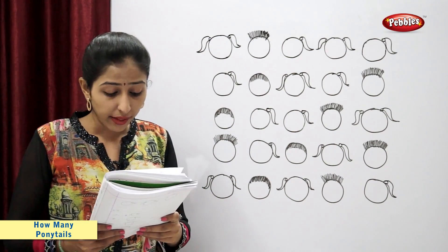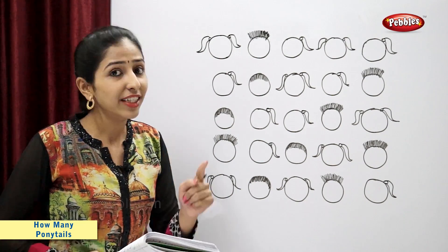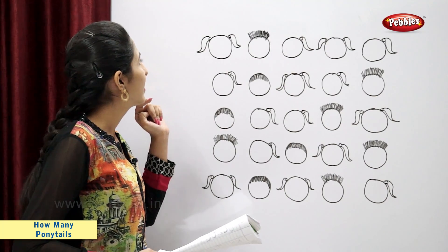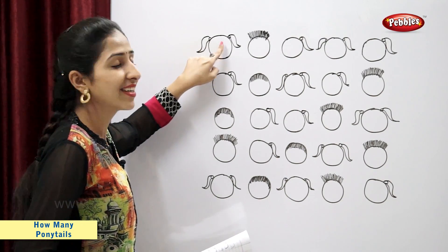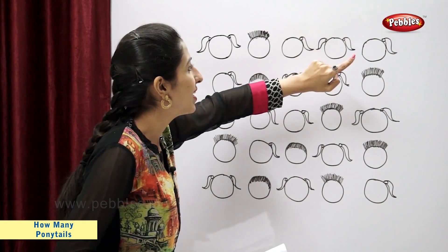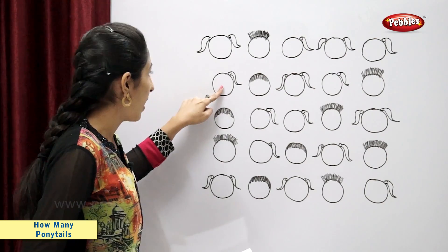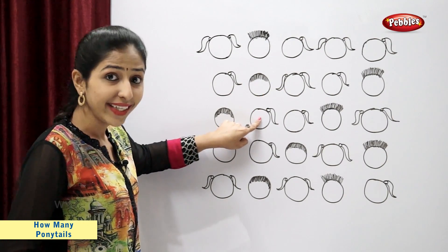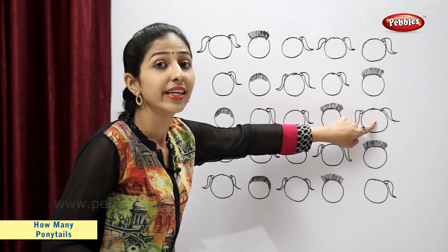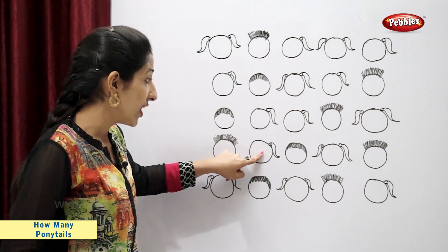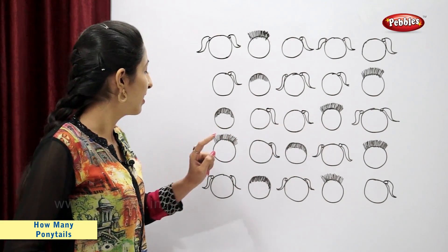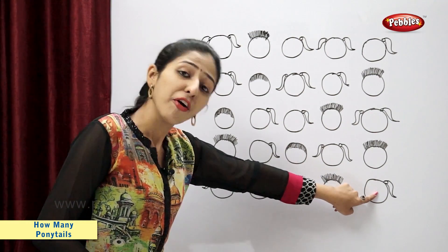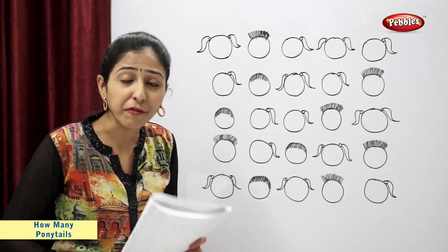Now tell me students, there are how many girls in the class? Let's find the number of girls. Girls with ponytails: one, two, three, four, five, six, seven, eight, nine, ten, eleven, twelve, thirteen, fourteen, and fifteen. So there are fifteen girls in the class.